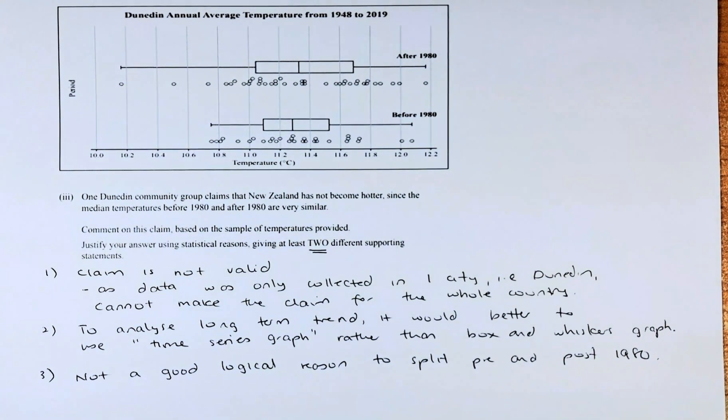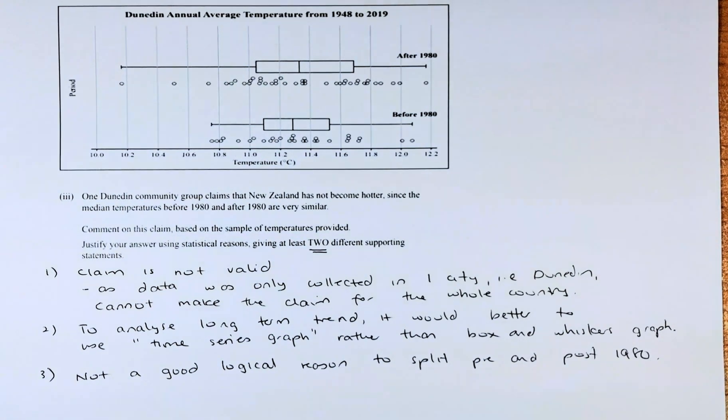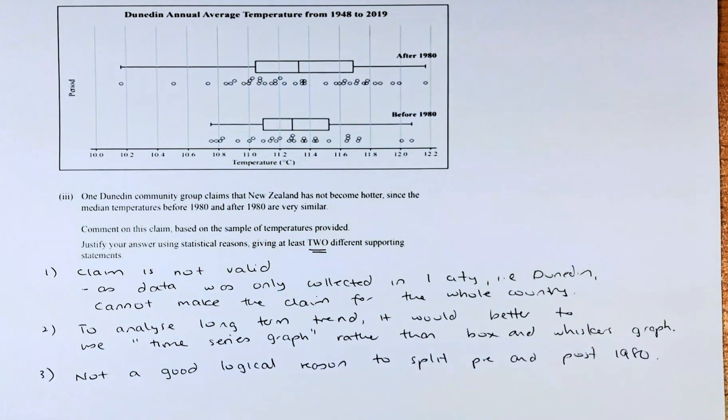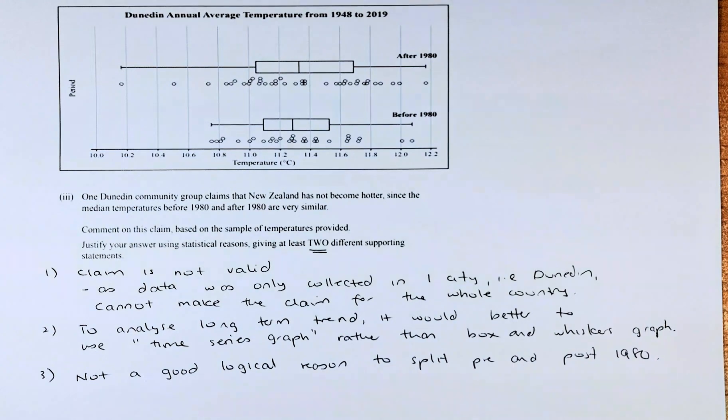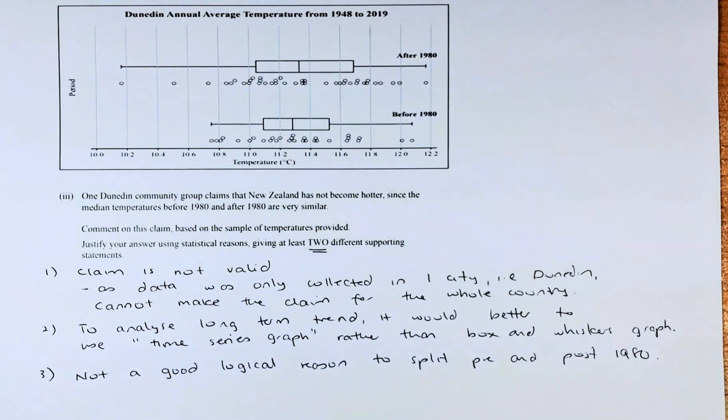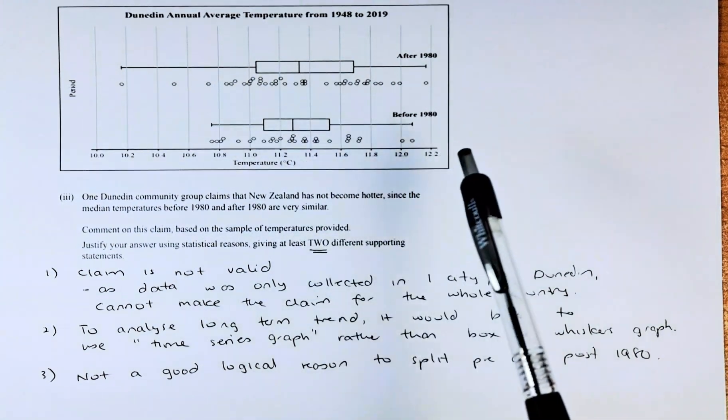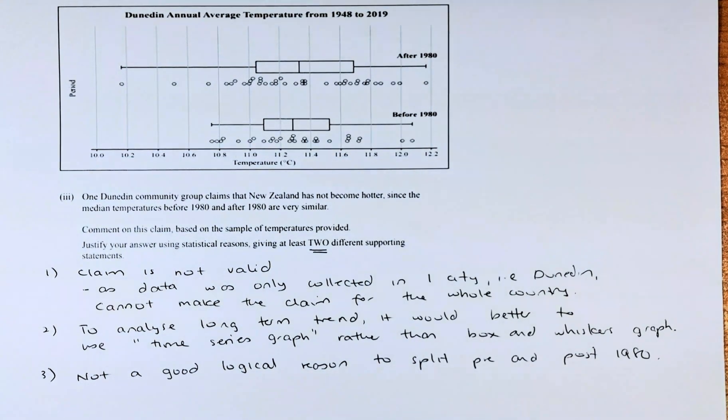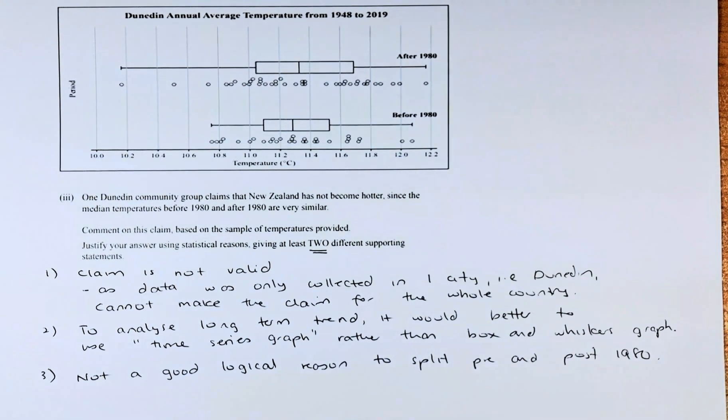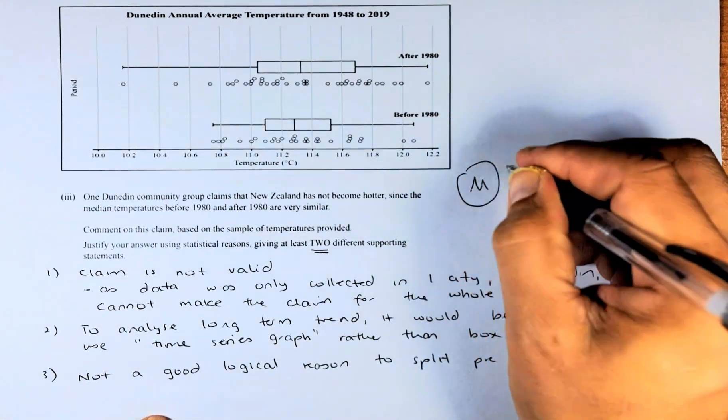Claim is not valid. Why? Because the data was only collected in one city, Dunedin, and you cannot make the claim for the whole of New Zealand. Point two: to analyze long-term trend, box and whiskers is not a good graph to compare long-term trend. A better graph would be the time series graph. And last but not least, why do you divide 1980 and before and after 1980? Why not 1990 or not 2000? So there is not a logical reason to split the two different categories into pre and post 1980. Those are the three reasons. You need to get two and you get a merit for this part of the question.